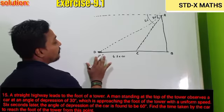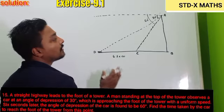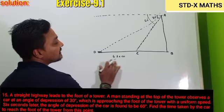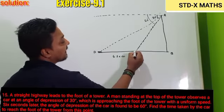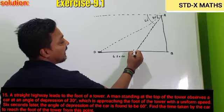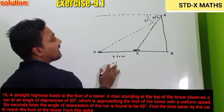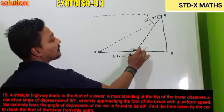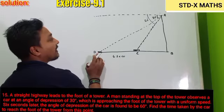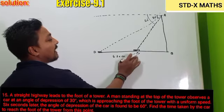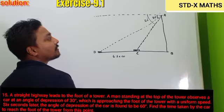The car was moving with a uniform speed, and after six seconds it was found that the angle of depression of the car's new position is 60 degrees. So initially the angle of depression is 30 degrees and after six seconds it becomes 60 degrees.